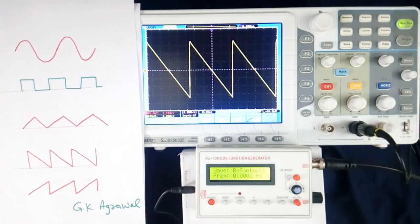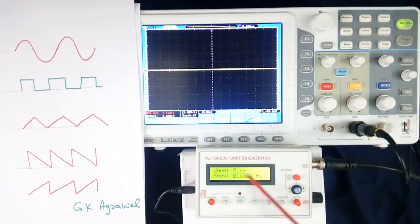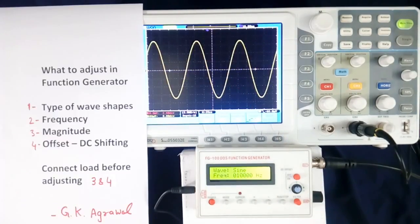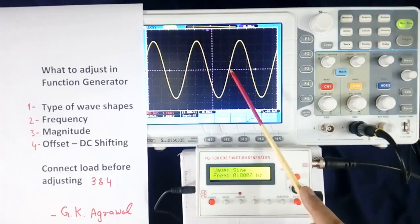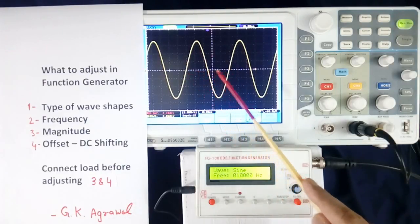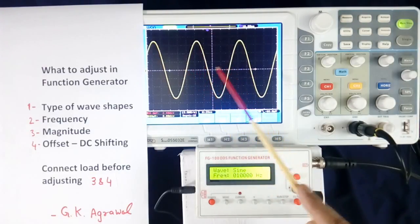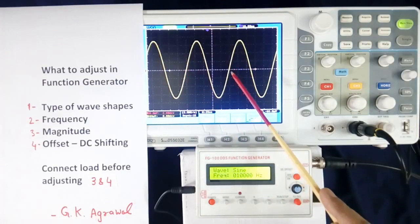Now again we will go back to sine wave. Is sine wave. Now second is adjusting frequency. At present this function generator is reading 10,000 Hz, that is 10 kHz. From here to here, I have adjusted for 20 ms per column. There are 5 columns. So from here to here it is 100 ms. That is 10 kHz. 1 by 100 ms is equal to 10 kHz.